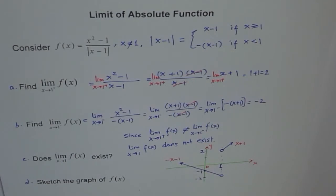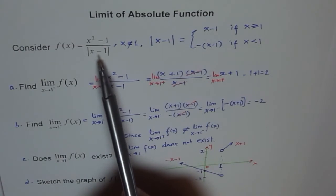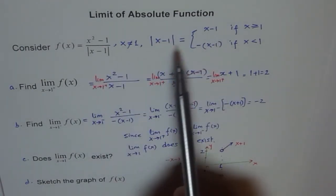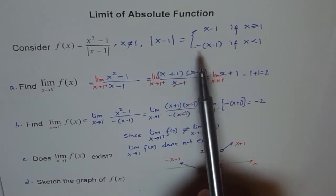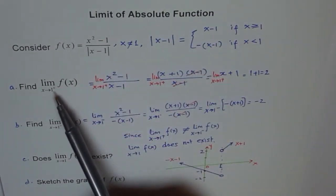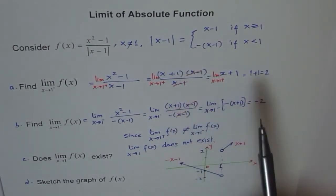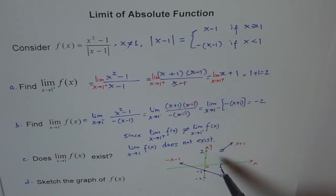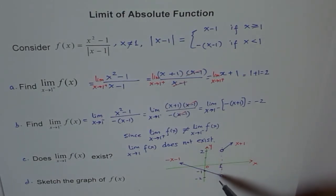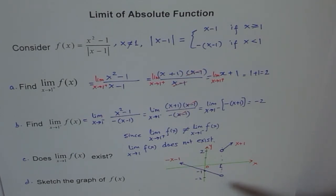I hope you understand how we did this problem. For every absolute value function, first define the function — it is a piecewise function with two separate pieces. According to which section you are interested in, use that particular piece. Because of that, you get positive and negative values at the vertex of the function. Normally, this means the limit will not exist and there is a discontinuity at that point. If you have any questions, put them in the comments. Thank you.